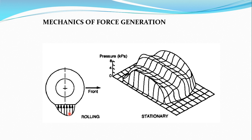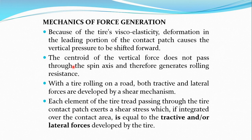When the vehicle is moving in the forward direction, the pressure distribution is not uniform — pressure will be higher at certain regions and lower at others. For calculation purposes, we assume the pressure distribution is uniform over some specific area. The centroid of the vertical forces is not passing at the spin axis — the hub of the tire — and due to this eccentricity some resistance forces are generated, known as rolling resistance.